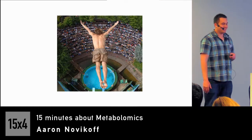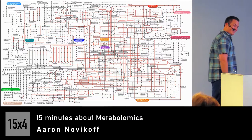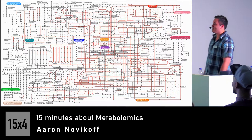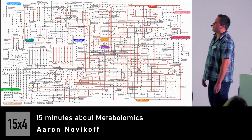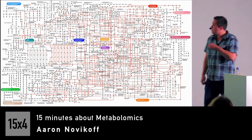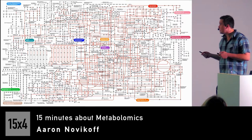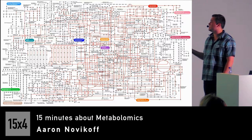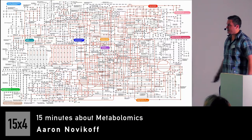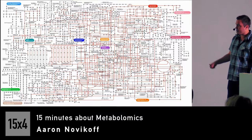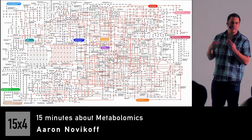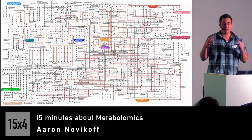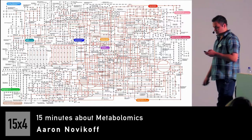We're diving right into metabolism to see what it really is. On this map we have different sections — carbohydrate metabolism, lipid metabolism, vitamins and minerals — and it's all connected. The little circular dots represent metabolites, and the lines represent interconversions and conversions that create a network of metabolism within the human cell.